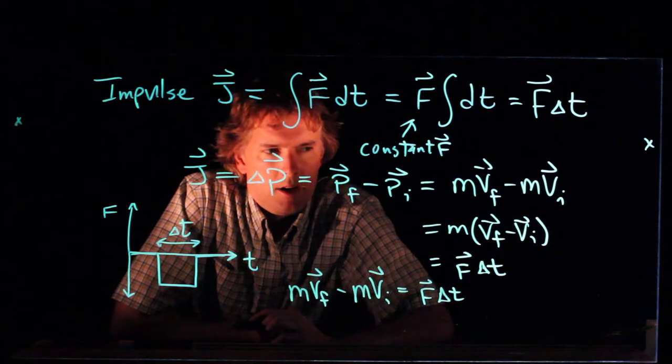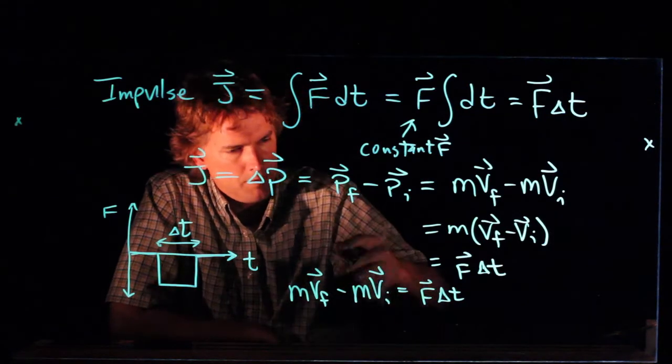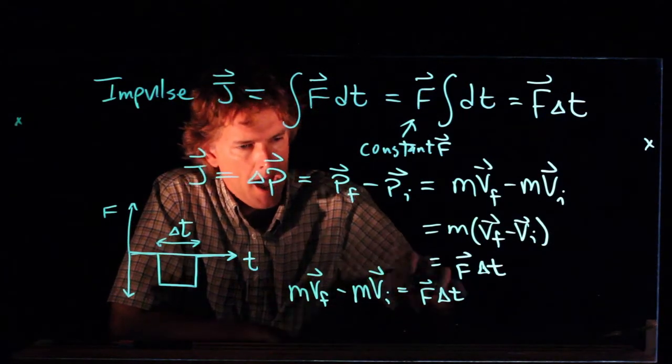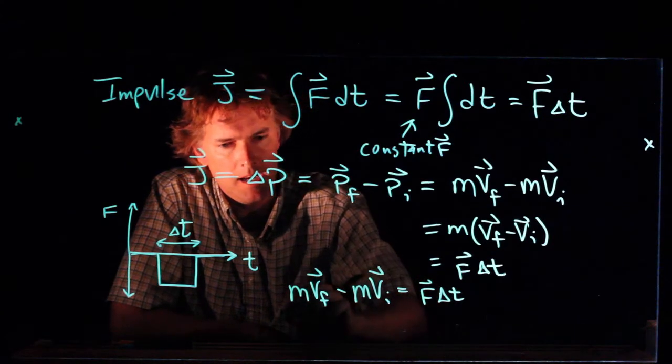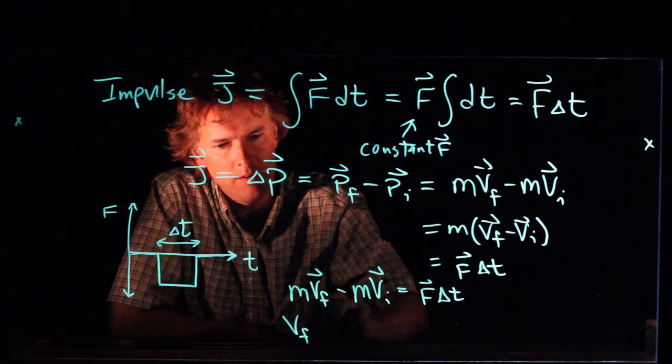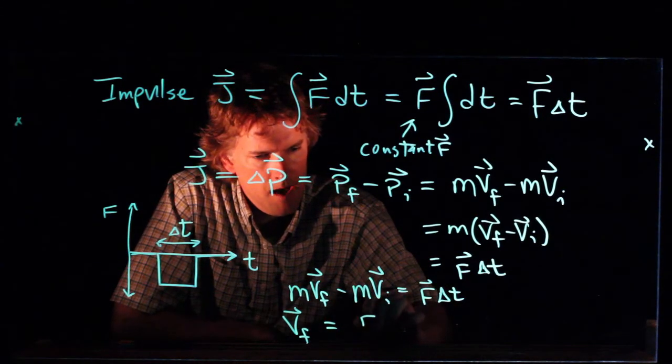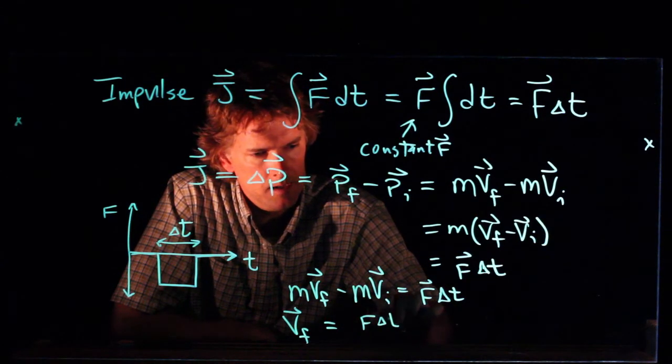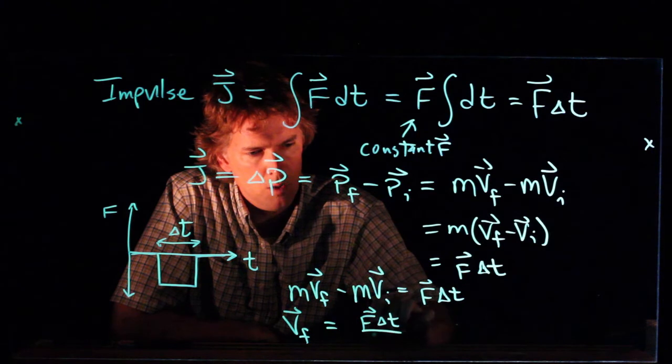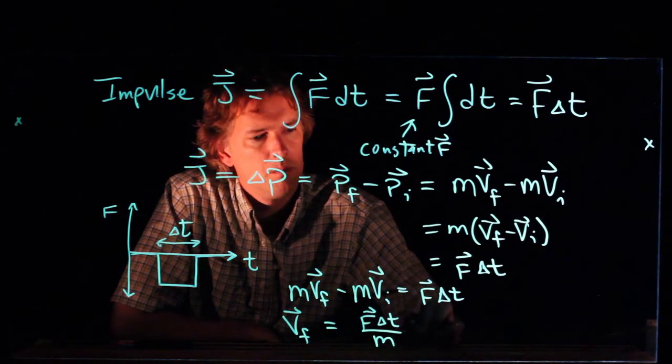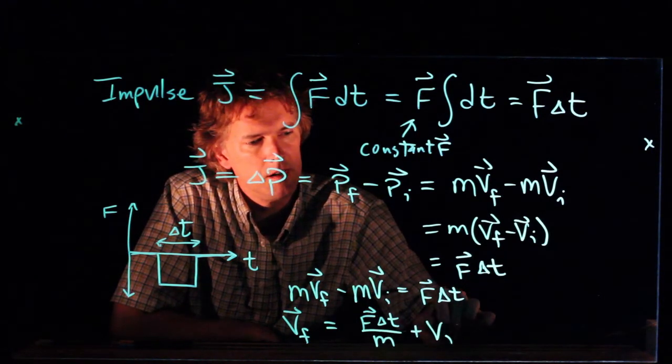So if you're trying to calculate v final, what do we do? We divide by m, and then we add v initial to the other side, and you can write this as v final equals f delta t over m plus v initial.